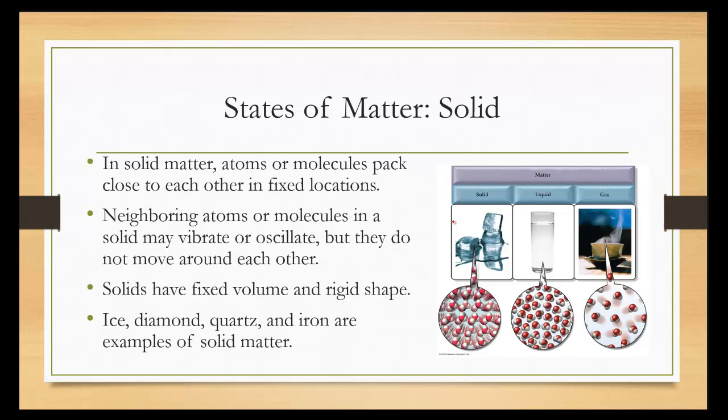In solid matter, atoms or molecules pack close together in fixed locations. Neighboring atoms or molecules in the solid may vibrate or oscillate, but they do not move around each other. Solids have a fixed volume and a rigid shape.